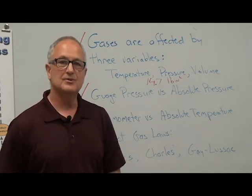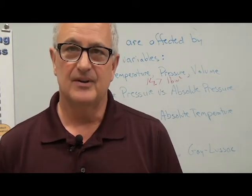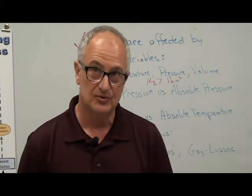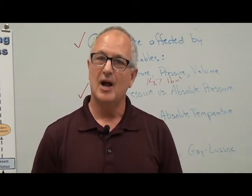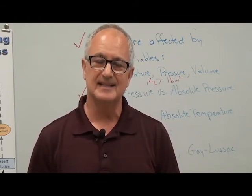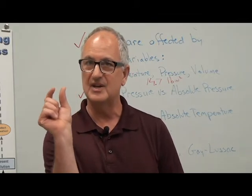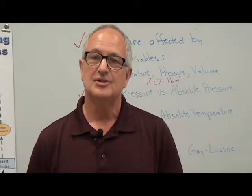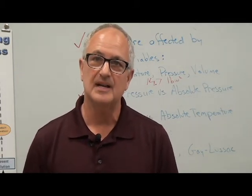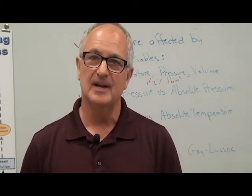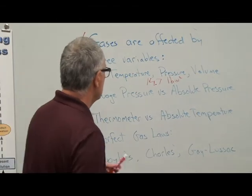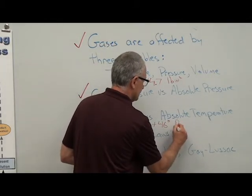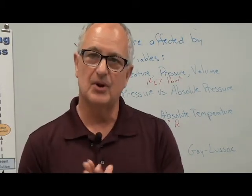Thermometer temperature versus absolute temperature. Zero on the Fahrenheit scale certainly isn't zero, and zero degrees Celsius isn't either. Absolute zero is minus 273 degrees Celsius. We use the Rankine scale, which has the same incremental size as Fahrenheit but starts at absolute zero. It takes 460 degrees Rankine to get to zero degrees Fahrenheit. So if you have a thermometer reading 100 degrees Fahrenheit, you add 460 to get your absolute temperature in degrees Rankine. These are things we're going to have to keep in mind as we solve our gas problems.